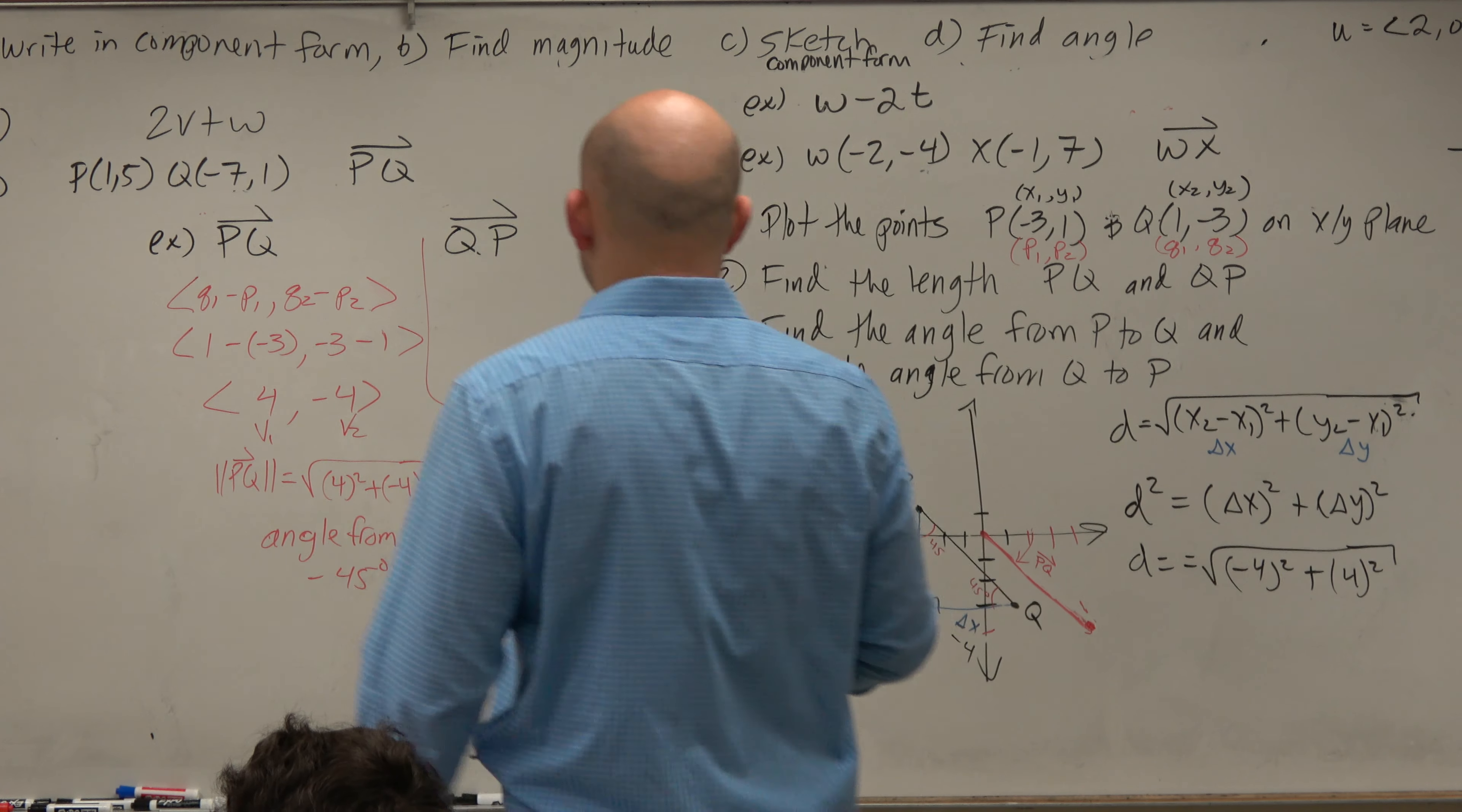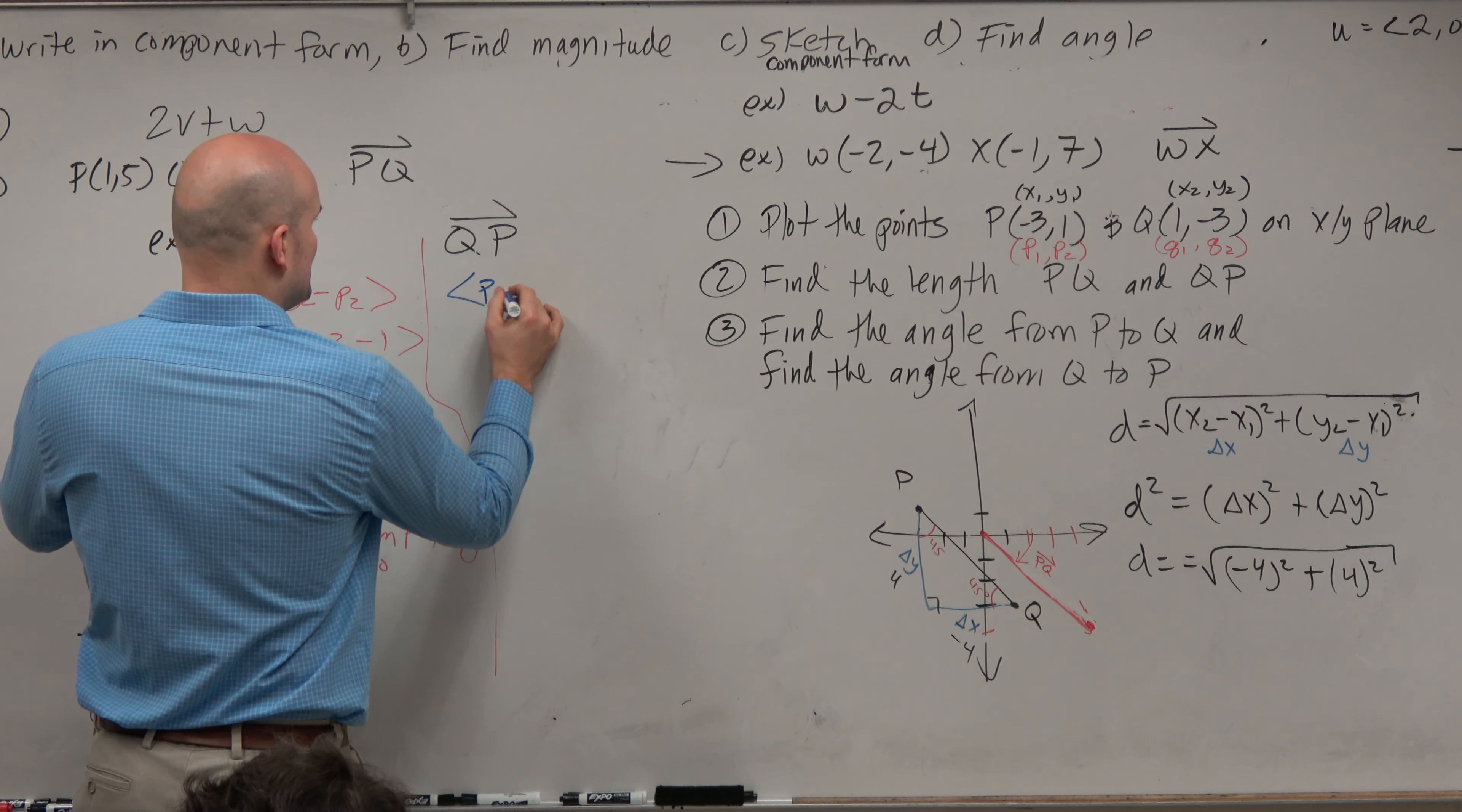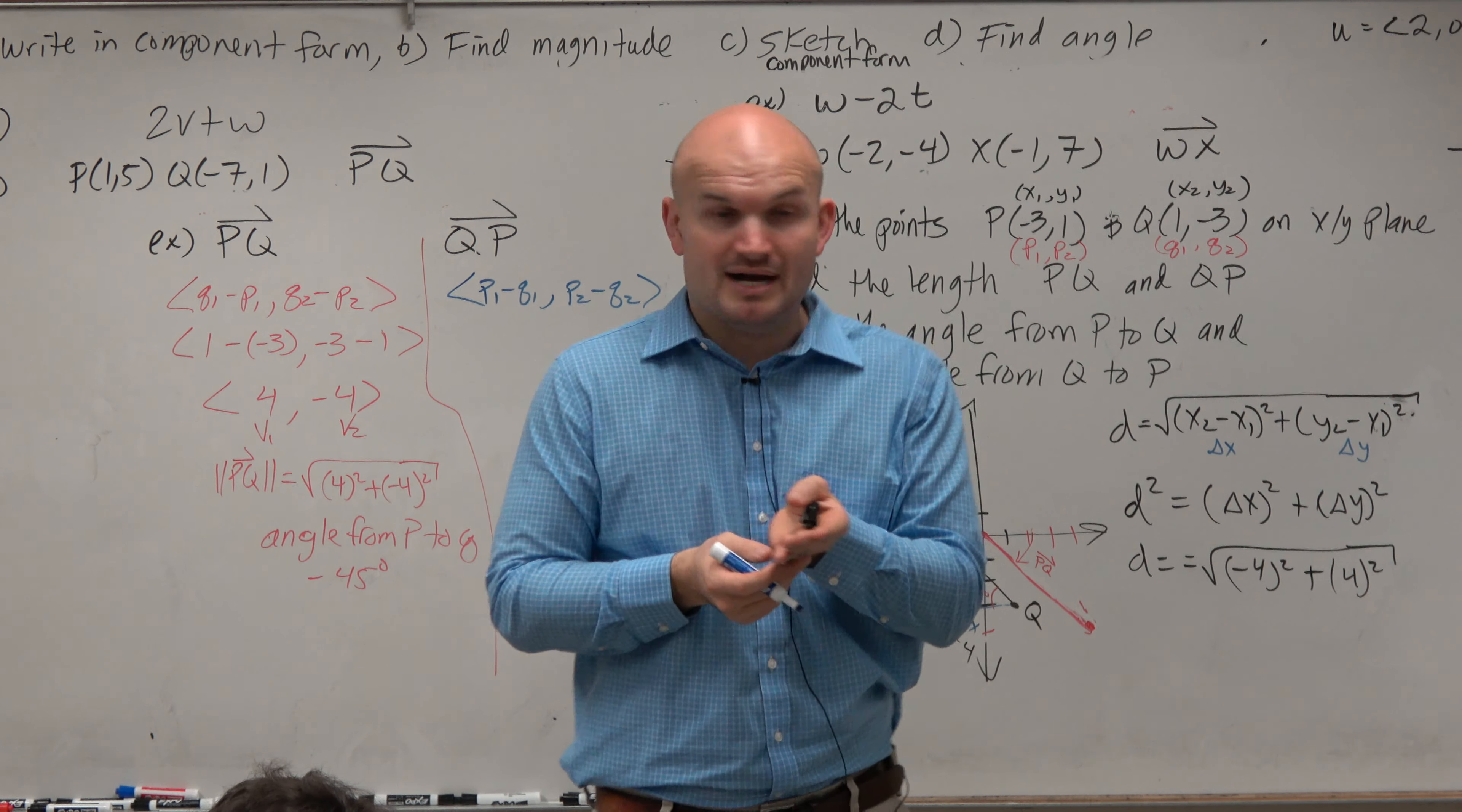So in this example, if I want to do q to p, well, now q is my initial point, right? And p is my terminal point. So now I've got to rearrange this. Now this is going to be p1 minus q1, and this is going to be p2 minus q2, right? You're subtracting your terminal point from your initial point, correct?